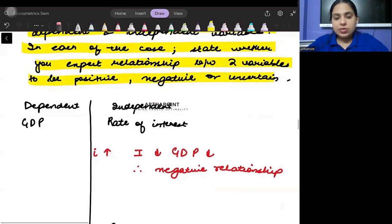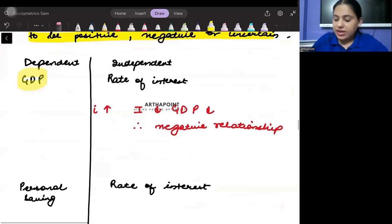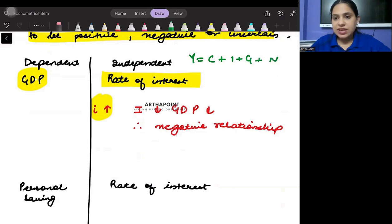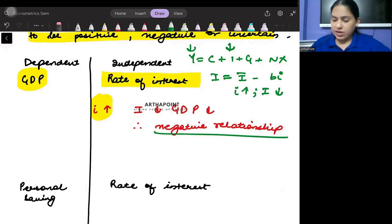The dependent variable is GDP and independent variable is rate of interest. Clearly it's a negative relationship when interest rate will increase. We know y is equal to c plus i plus g plus nx. But investment is i bar minus bi. So when interest rate increases investment decreases and that means output will decrease, GDP decrease. So negative relationship.